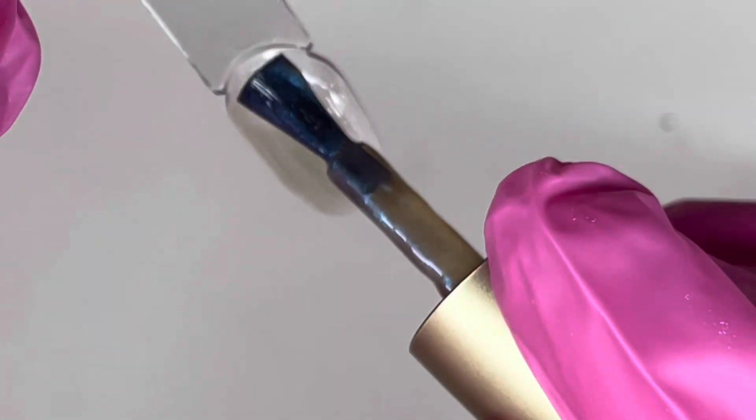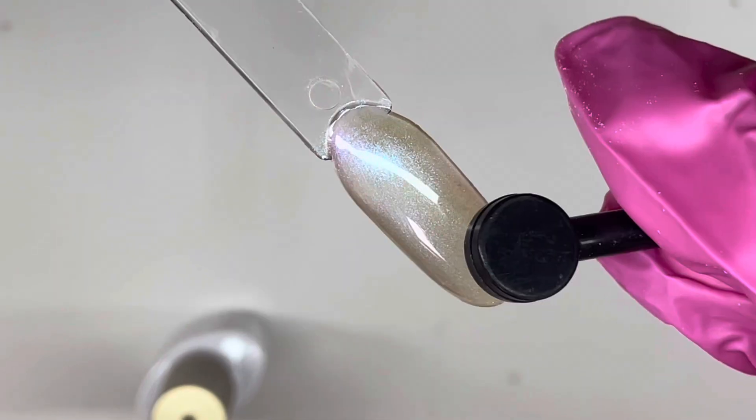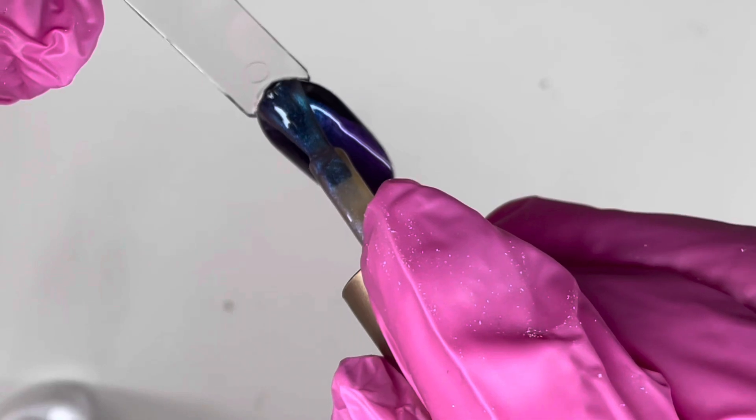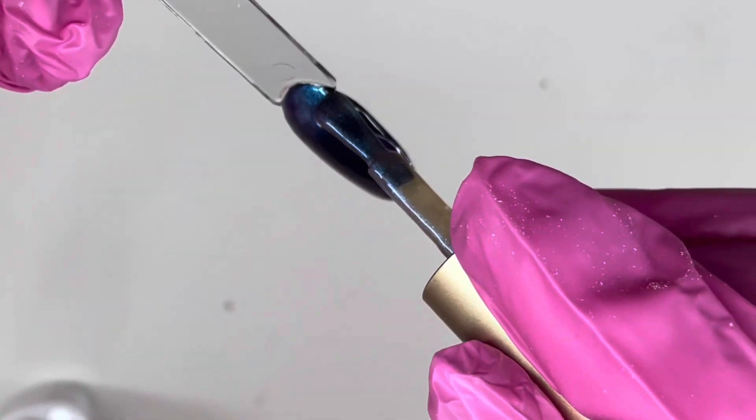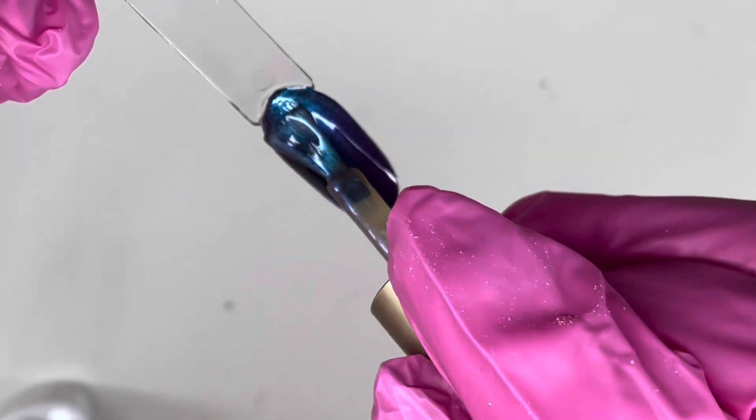I'm going to be swatching these gorgeous colors for you all. This one is a gorgeous bluey purpley tone. I've actually swatched them over a black gel as well so you get to see the color difference between what it looks like on its own and over a black gel.